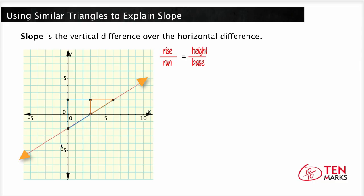So use this first triangle to find the slope of the line. So we know that this height is 1, 2, 3, 4, 4 units, and the base is 6 units. So the ratio of the height to the base is 4 over 6, so the slope of the line is 2 thirds.